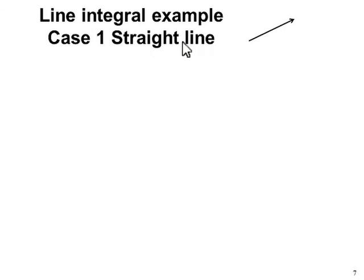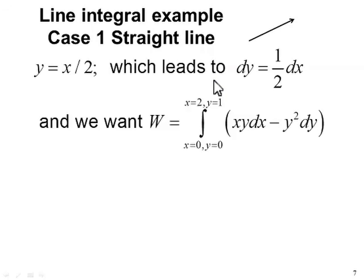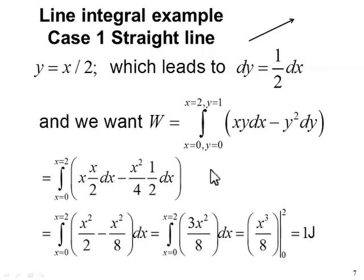For the straight line case, the substitutions of y equals x over 2 and dy is equal to dx over 2 are straightforward. We choose to connect everything to the variable x and the limits are now just in x. Since you are already mavens at computing single variable integrals, we're done. The answer in this case, the work is 1 joule.